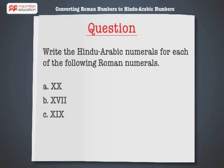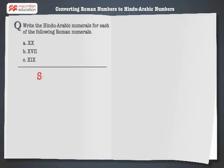Write the Hindu-Arabic numerals for each of the following Roman numerals: XX, XVII, XIX. Let's solve the first problem. XX can also be written as X plus X. The Hindu-Arabic numeral for X plus X is 10 plus 10, or 20. Hence, XX is equal to 20.